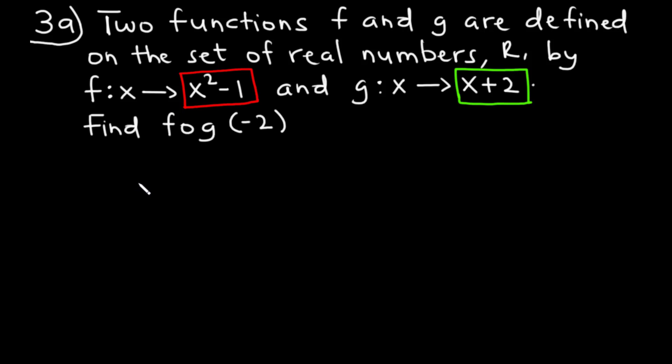From the question, we have f(x) = x² - 1 and g(x) = x + 2. We are asked to find f∘g(-2). However, let's find f∘g first.